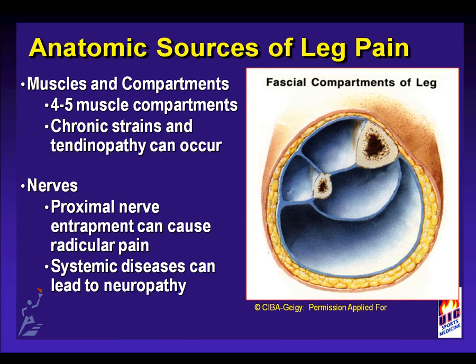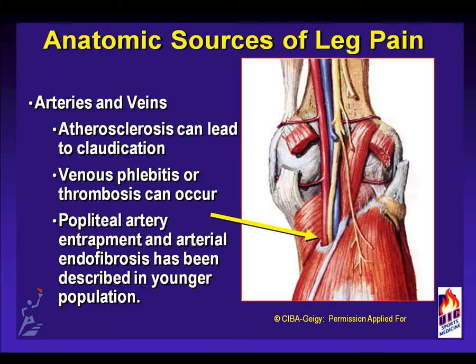Additional sources of potential leg pain include nerve injury, either from proximal in the spine or about the hip with radicular pain distally into the leg, systemic diseases which lead to neuropathy, or secondary to direct trauma in the leg itself due to compression or direct injury. Anatomic sources also include the vascular system, with atherosclerosis leading to claudication in elderly patients, venous phlebitis secondary to disuse, extended sitting, or blood coagulopathy problems, as well as the relatively rare problem of popliteal artery entrapment and lower arterial endofibrosis, which can mimic a deep posterior exertional compartment syndrome.